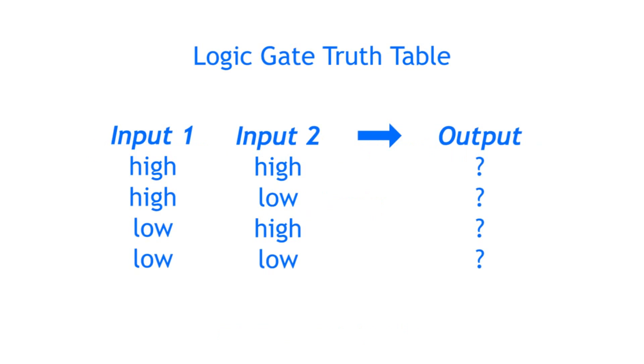Binary logic gates compare two input levels to their so-called truth table and then output a high or low signal accordingly. Here are the most common logic gates you will find in Eurorack modules.